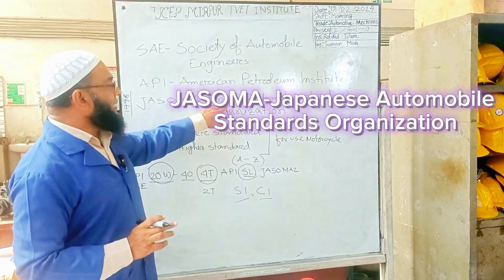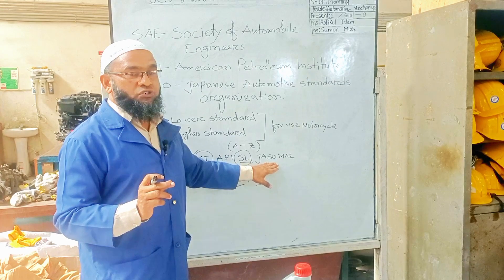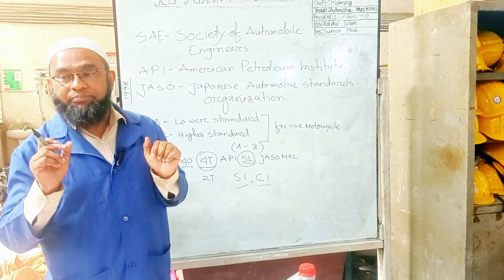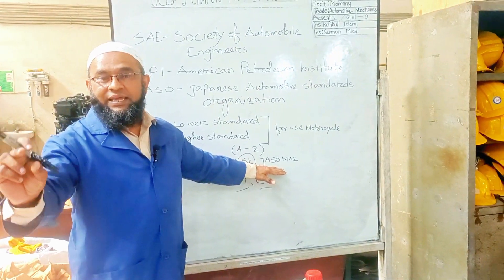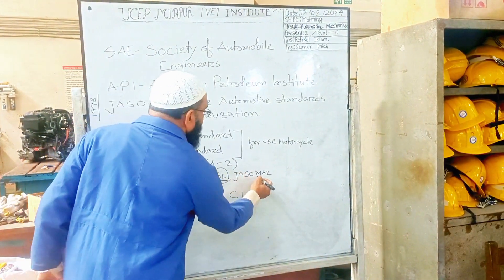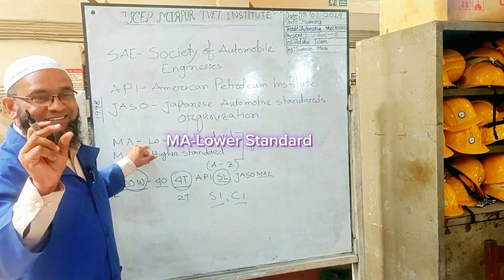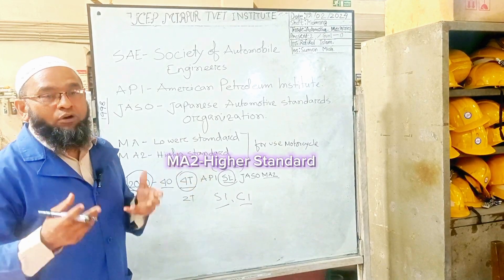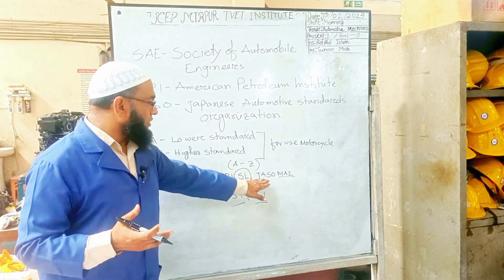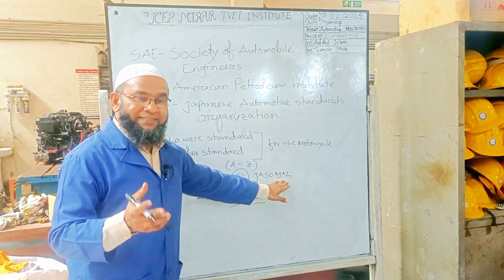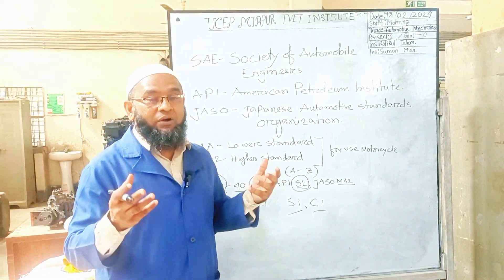JASO stands for Japanese Automotive Standard Organization. For motorcycles, JASO uses its own classification system. The motorcycle oil standard uses MA2 — MA2 is a higher standard, while a lower grade is below it. MA2 is an upgraded, higher standard oil available in the market.